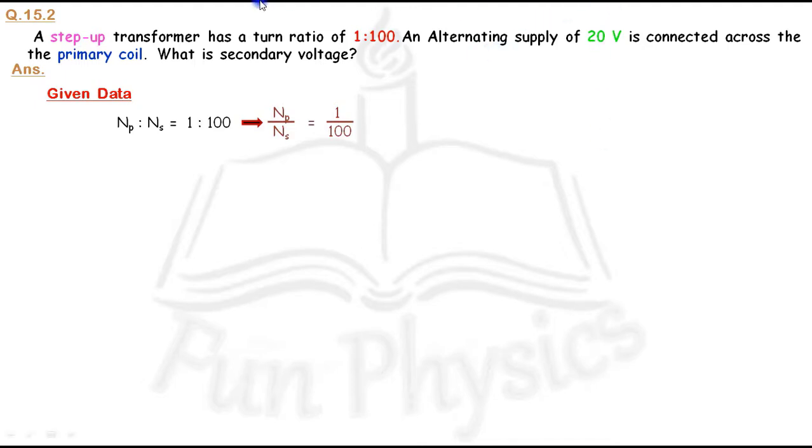Remember that in a step-up transformer, the number of turns in the secondary coil is greater, while in a step-down transformer, the number of turns in the secondary coil is less compared to the primary coil.